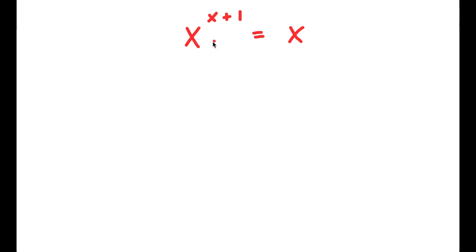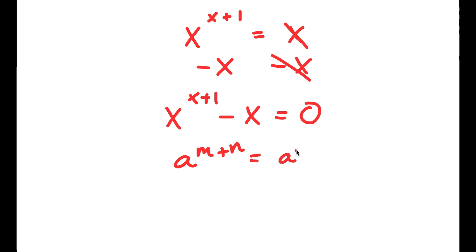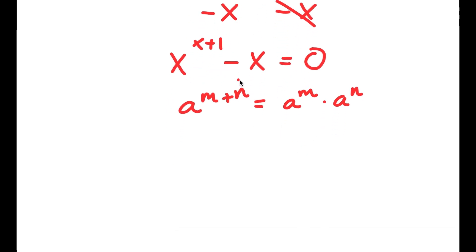In this problem, I have x to the power of x plus 1 is equal to x. To solve this, I'm going to subtract x from both sides, leaving x to the power of x plus 1 minus x equals 0. Using the rule a to the power of m plus n equals a to the power of m times a to the power of n, x to the power of x plus 1 becomes x to the power of x times x to the power of 1. So I have x to the power of x times x minus x equals 0.